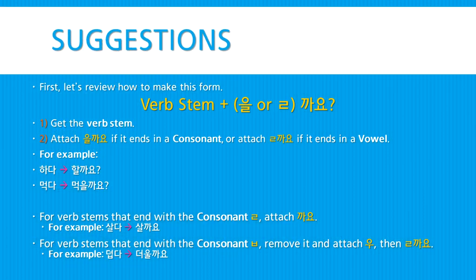So here's the form again. Take a verb stem and attach 을까요 if it ends in a consonant, or attach ㄹ followed by 까요 if it ends in a vowel. For example, 하다 would become 할까요, and 먹다 would become 먹을까요. For verb stems that end with the consonant ㄹ, just attach 까요 to the end.